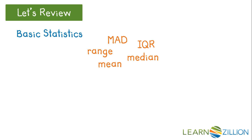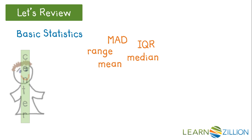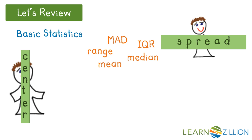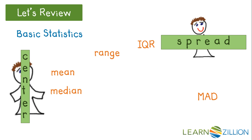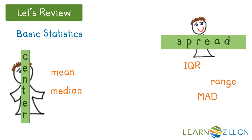These five statistics can be separated into two groups: measures of center and measures of spread. Median and mean are both measures of center, while the measures of spread are mean absolute deviation, range, and the IQR. You might also see or hear the word 'varies' when referring to spread.